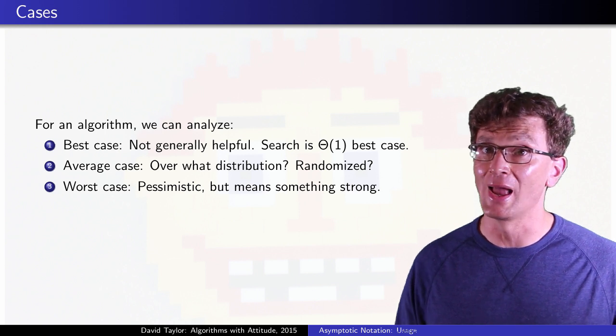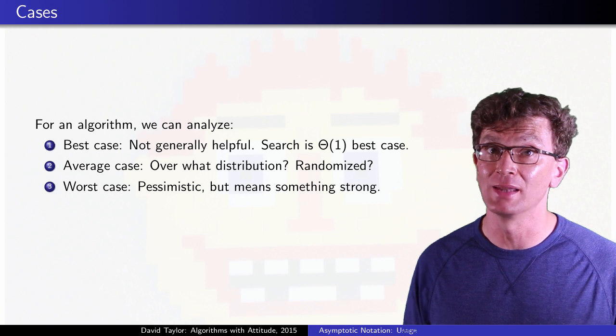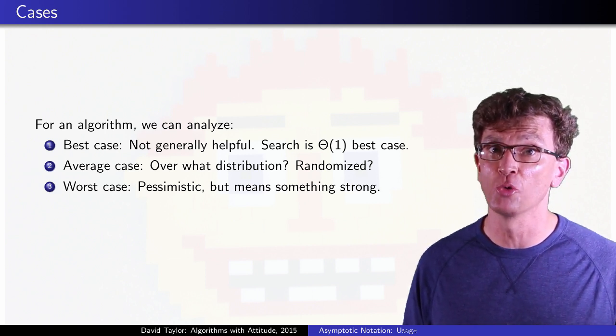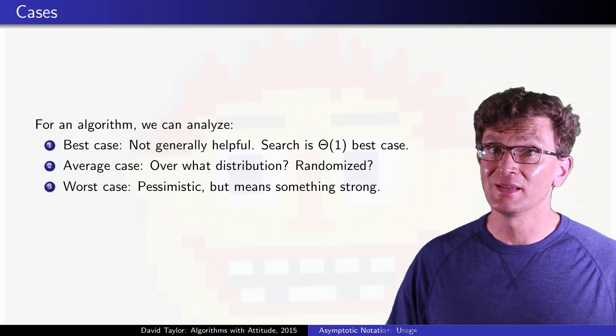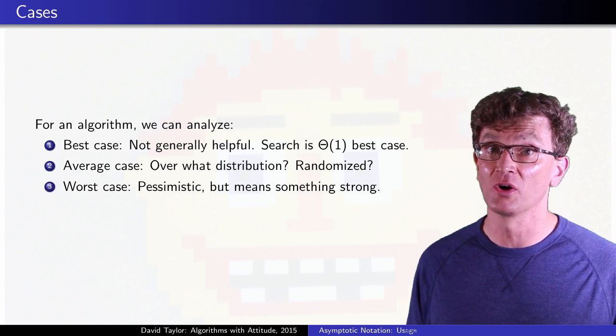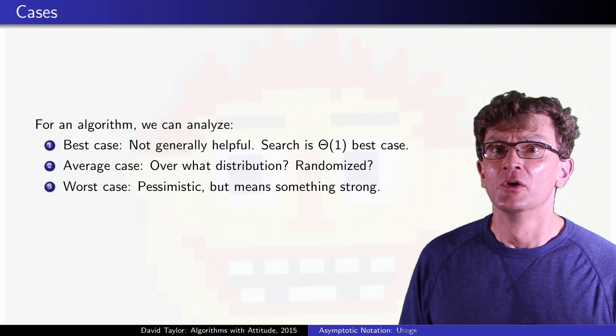Again, considering merge sort over n different values, it has best, worst, and average case runtime of order n log n. But worst case analysis is good enough to really tell us most of the story there. While in quicksort, it tells us a lot less, because quicksort's worst case performance is worse than the overwhelming majority of its runs.